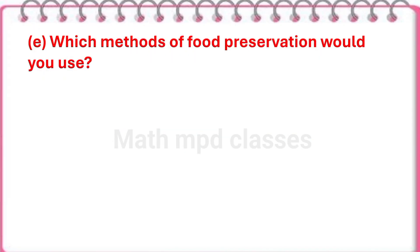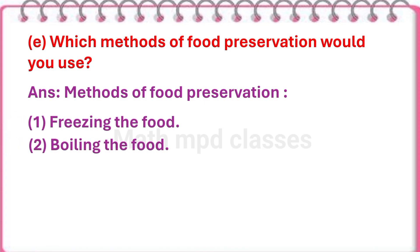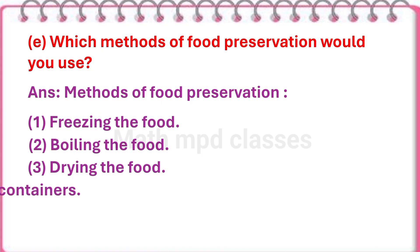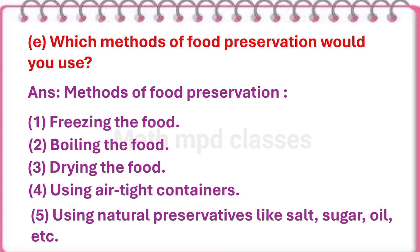Next question: Which methods of food preservation would you use? Answer: Methods of food preservation. First, freezing the food. Second, boiling the food. Third, drying the food. Fourth, use airtight containers. And fifth, using natural preservatives like salt, sugar, oil, etc.